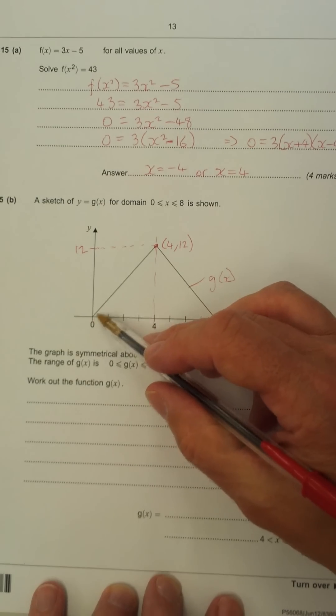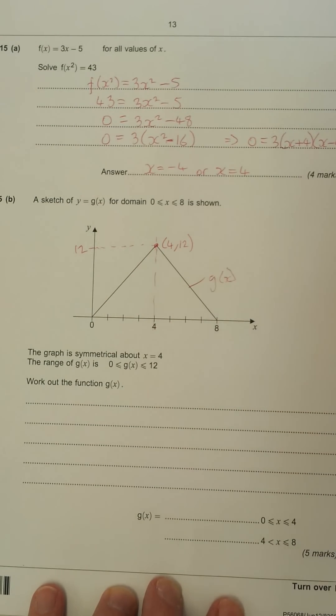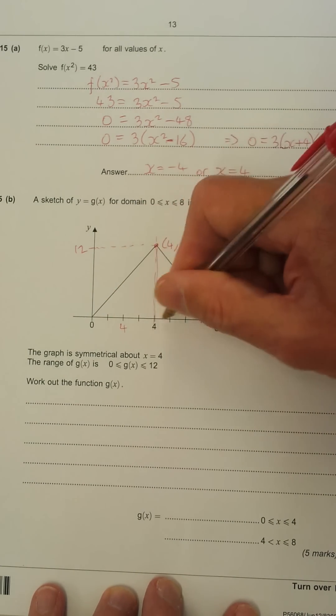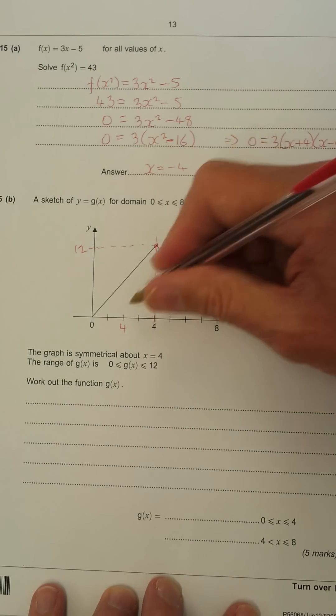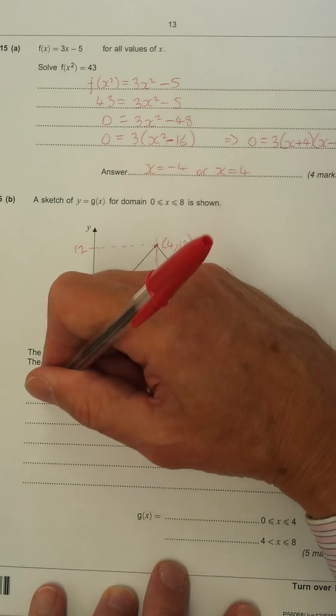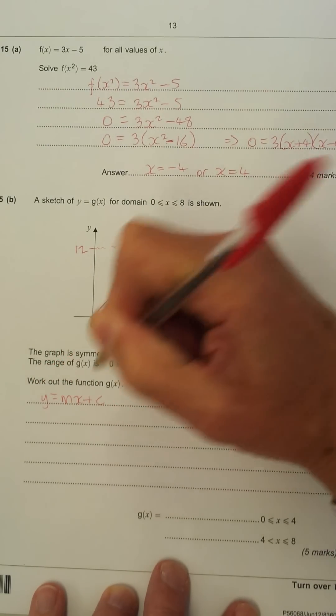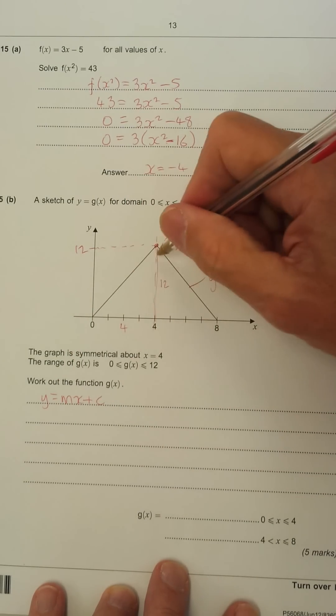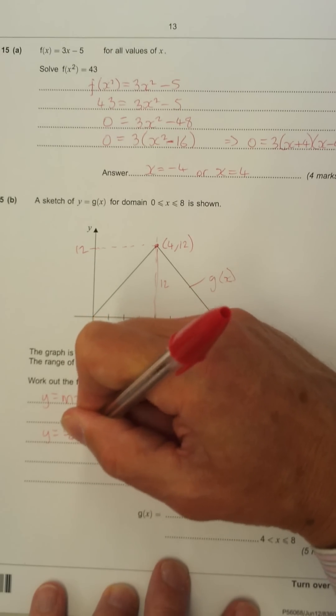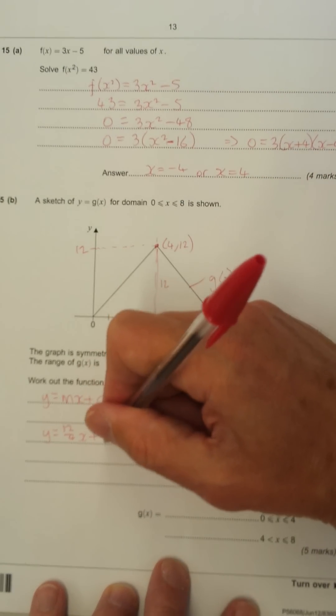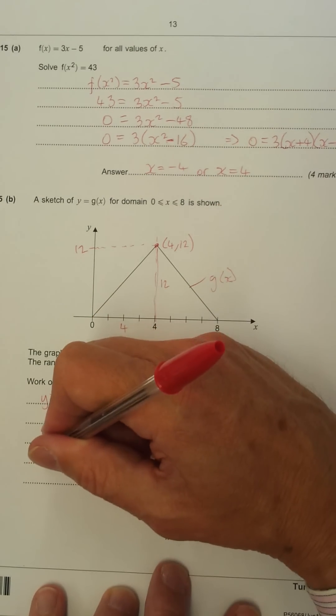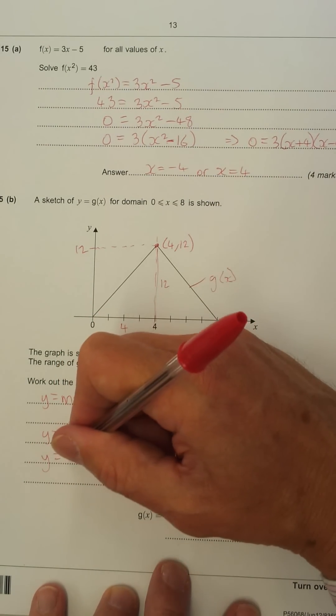Work out the function of x. Now, we've got this part here. This is the easier part. So we'll look at this part first. Now, we've got this part here is 12 up and 4 across. So the gradient is changing y over changing x, which is 12 over 4. And we know that any straight line is the form of y equals mx plus c. So we've got y equals mx plus c. And we know the gradient is m. In this case, it's 12 over 4. So y equals 12 over 4x plus 0, because it cuts at 0. That's the y-intercept c. Simplify this. y equals 12 divided by 4 is 3x.